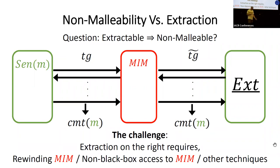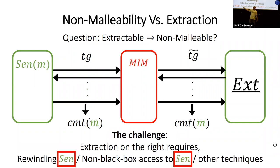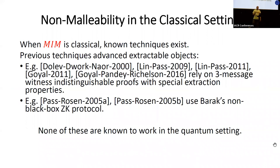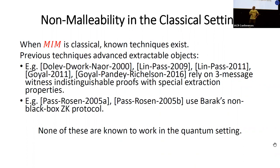But when we try to extract from a circuit, we may need to rewind it or have non-black-box access. In the non-malleable setting, the man-in-the-middle also includes the sender on the left, so we'd need to apply rewinding and non-black-box access to the sender too — which is invalid for a security reduction against the hiding property. This is why we still have non-malleable commitments classically: classical schemes use specialized techniques that work in the classical setting but we don't know how to make these work in the quantum setting.